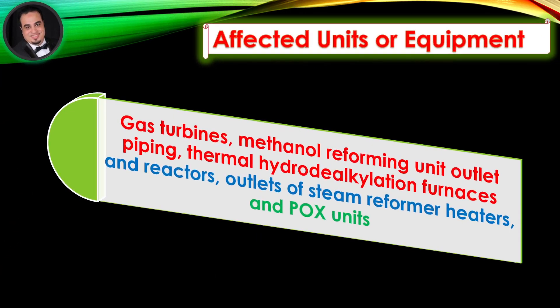Affected units or equipment: Metal dusting has been reported in gas turbines, methanol reforming unit outlet piping, thermal hydrodialkylation furnaces and reactors, outlets of steam reformer heaters, and partial oxidation units.